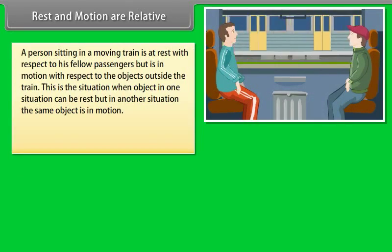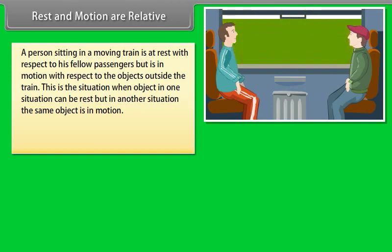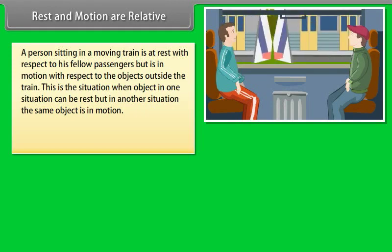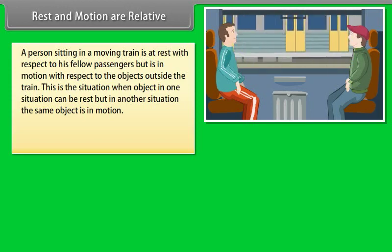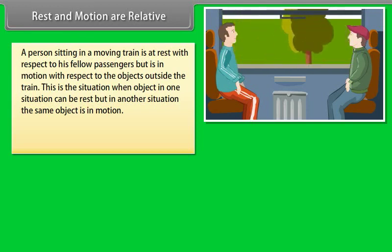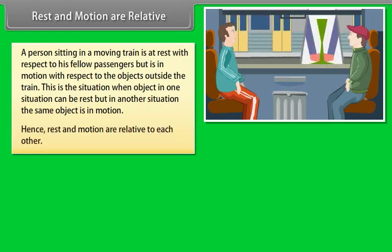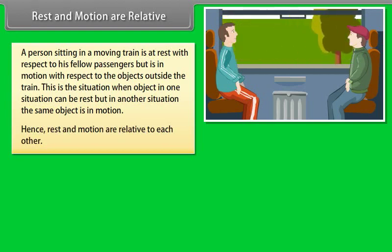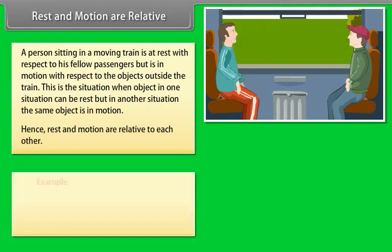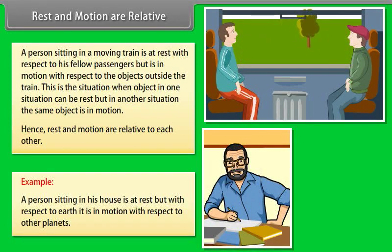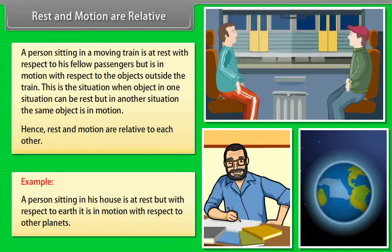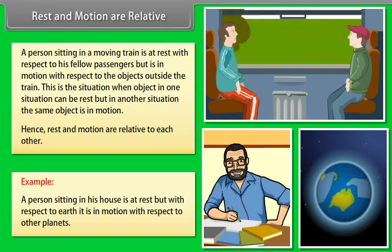Rest and motion are relative. A person sitting in a moving train is at rest with respect to his fellow passengers but is in motion with respect to objects outside the train. This shows that an object in one situation can be at rest but in another situation the same object is in motion. Hence rest and motion are relative to each other. For example, a person sitting in his house is at rest, but with respect to the Earth it is in motion, and similarly with respect to other planets.